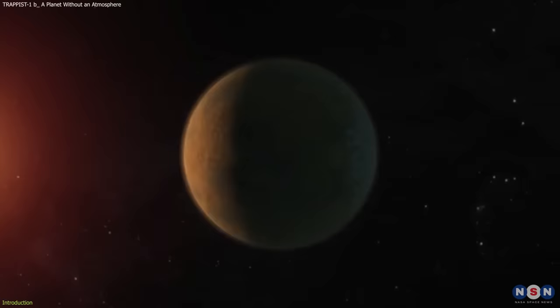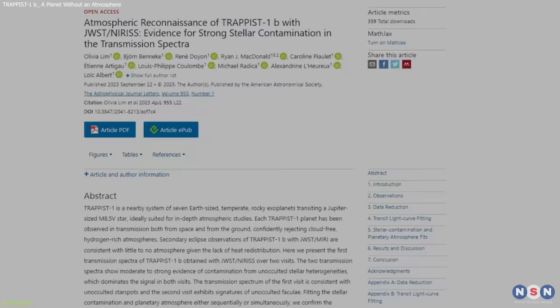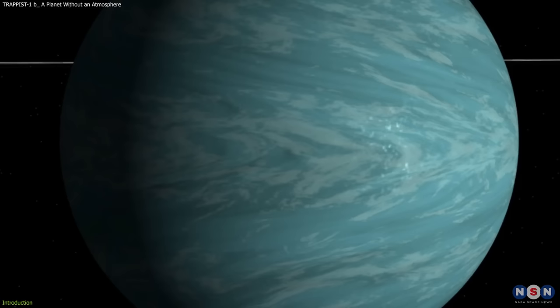This is exactly what a new study did, using the James Webb Space Telescope to observe the exoplanet TRAPPIST-1b, which is the closest planet to its star in the system. The study aimed to answer a simple but important question: does TRAPPIST-1b have an atmosphere?